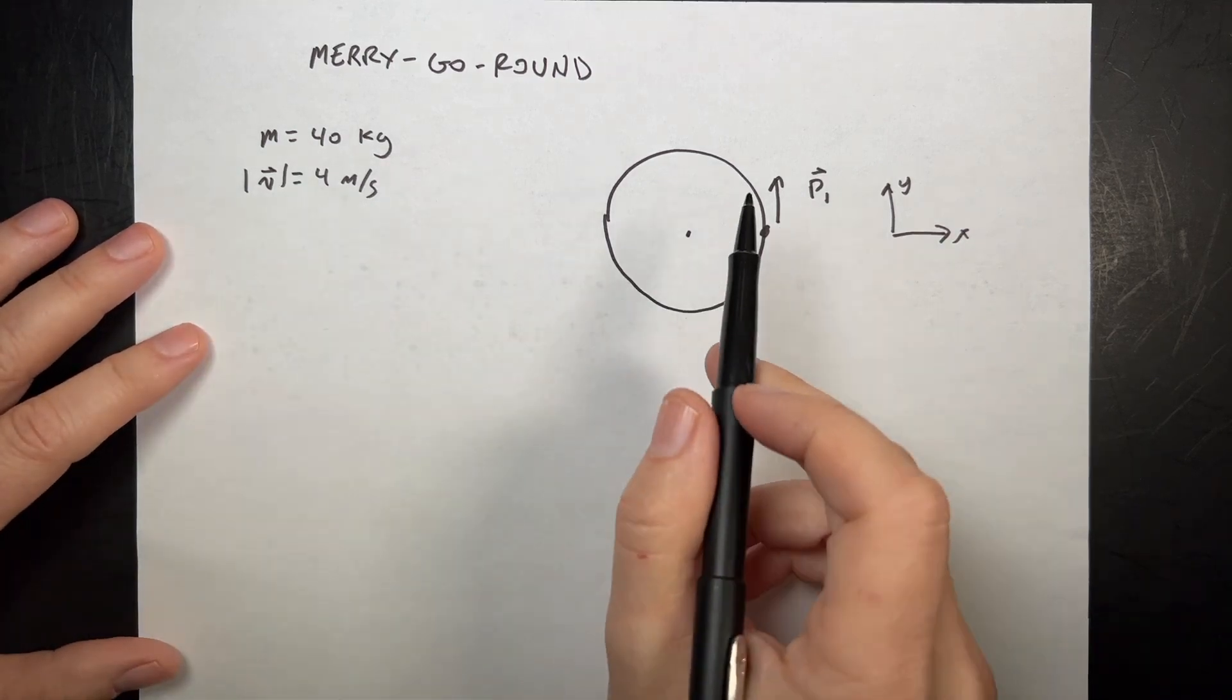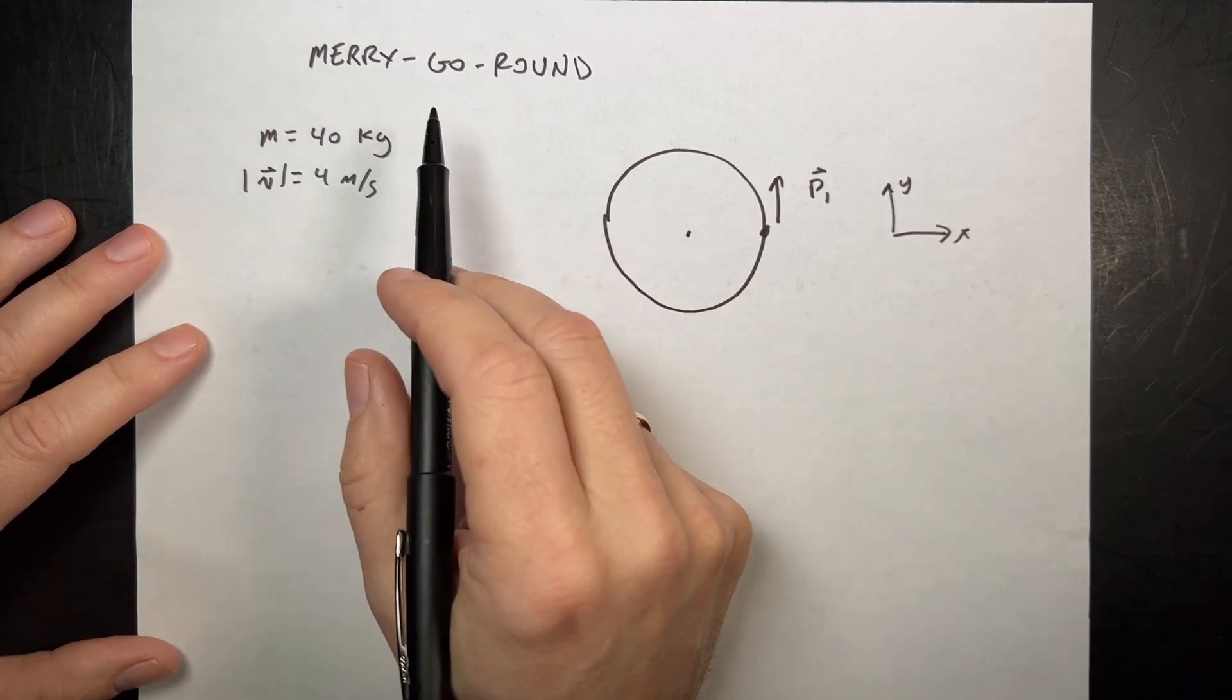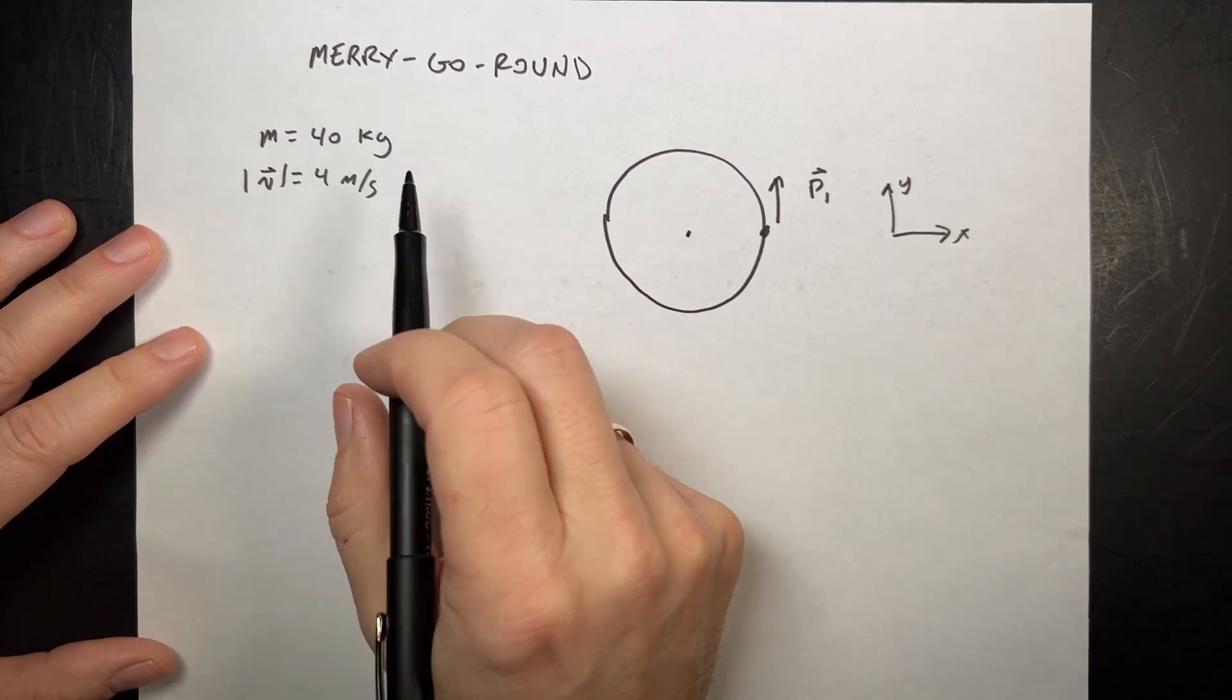Practice momentum problem with a merry-go-round. So there's a merry-go-round seen from the top. It's really kind of weird, a merry-go-round if you think of the word, but that's what it is.